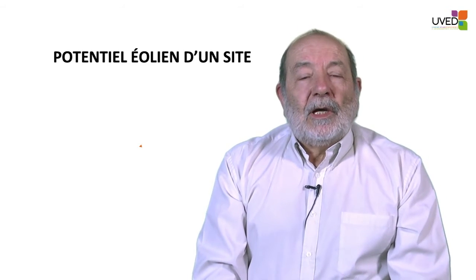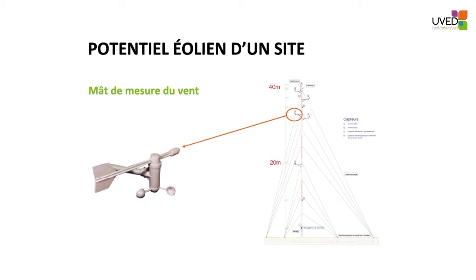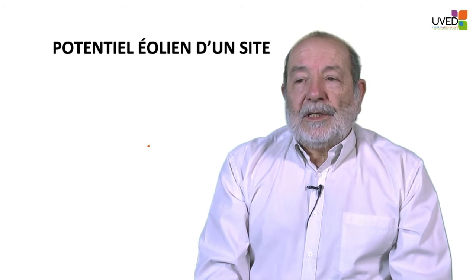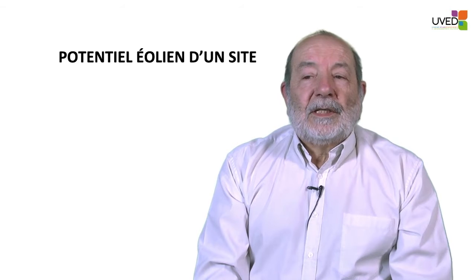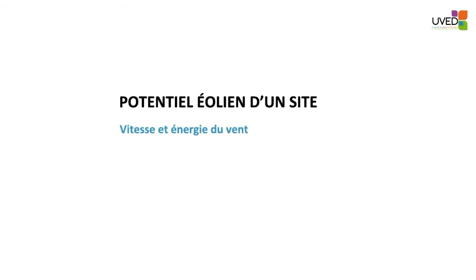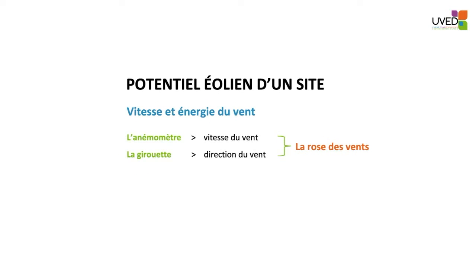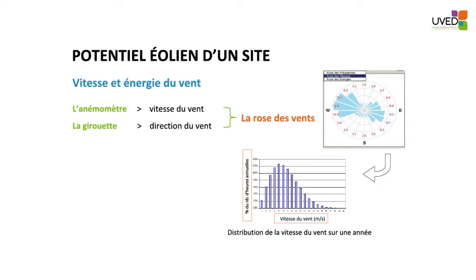To assess the energy potential of a site for a wind turbine, measurements are made with a wind gauge placed on a measuring tower before installation. There are wind sensors for direction and speed measurements placed at several heights to measure the roughness of the site. The wind gauge measures velocity and the weather vane measures direction. Measurements are taken every ten minutes over one month, several months, or one year, providing data for a compass rose showing the preferred wind directions so the turbine can be placed correctly.